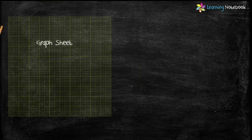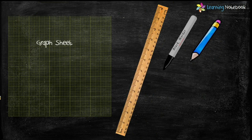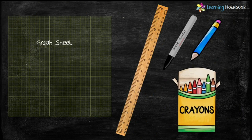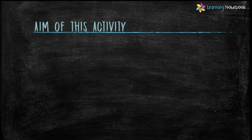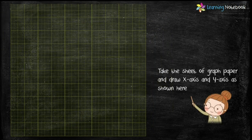For this activity we need a graph sheet, a ruler, a marker pen, a pencil, and few crayons. The aim of this activity is to use coordinate geometry to find a picture of a minion by plotting and joining points with given coordinates in a plane. So let's start.